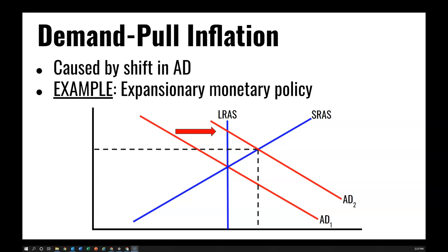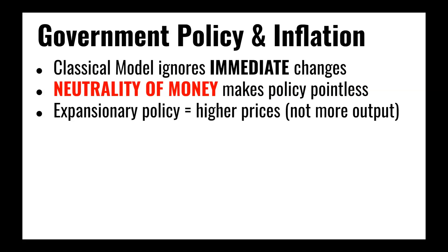Government could try to pursue expansionary monetary policy in order to increase output, but there are consequences to that. Classical economic theory argued against government intervention because, from their perspective, all you end up with is the neutrality of money — if the economy is in long-run equilibrium and the government tries to use expansionary policy to create more output, what it ends up with in the long run is simply higher prices and the same level of output as before.